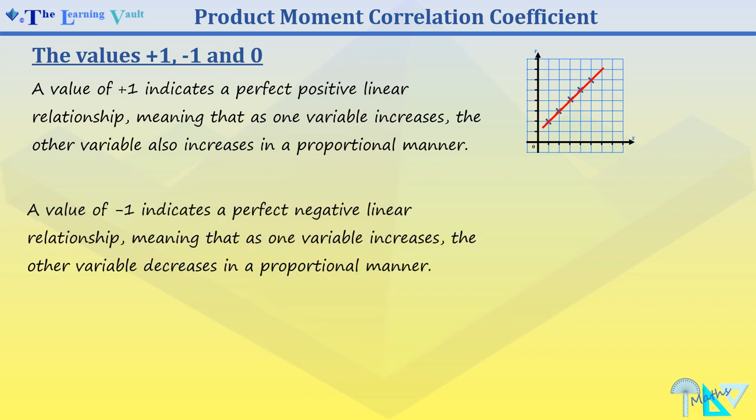The value of negative 1 indicates a perfect negative linear relationship, meaning that as one variable increases, the other variable decreases in a proportional manner.